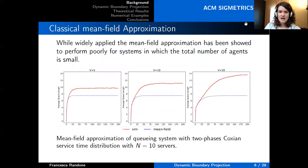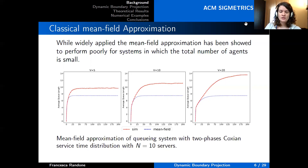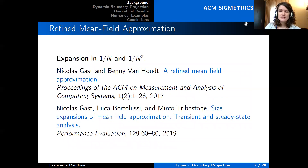While widely applied, it is known that mean field approximation can perform poorly when applied to systems with a small number of agents. While Kurtz's theorem guarantees that as the number of agents tends to infinity the mean field approximation will tend to the stochastic simulation, for small numbers of agents the error is difficult to control. Here you can see again a queuing system with the two-phase Coxian service time distribution, where the error increases with the variance of the system, since mean field approximation is insensitive to variance. We are considering just 10 servers.